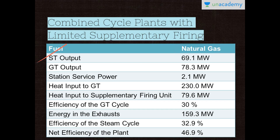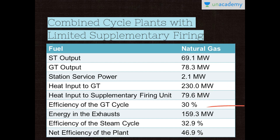The steam turbine output is given to be 69.1 megawatts. The gas turbine output is 78.3 megawatts. The station service power, heat input to the gas turbine, and heat input to the supplementary firing unit are also given. The efficiency of the gas turbine cycle, the energy in the exhaust, the efficiency of the steam cycle, and the net efficiency of the plant are also discussed in this table.